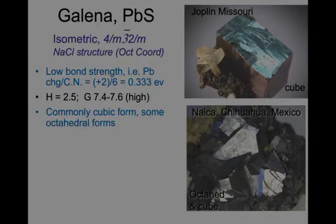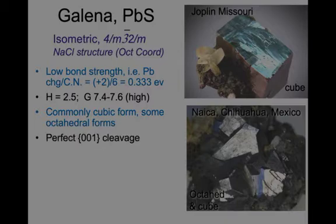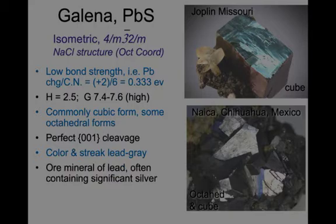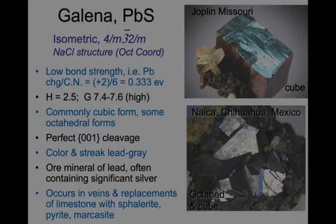It commonly forms cubic forms, as shown in the upper right, and sometimes octahedral forms, as shown in the lower right. It has perfect (0,1,0) cleavage — the cubic forms have the A1, A2, A3 axes at right angles, and each one of those has a cleavage. The color and streak are lead gray to silvery gray, and this is an ore mineral of lead, often containing significant amounts of silver. It occurs in veins and replacements of limestone, and with sphalerite, pyrite, and marcasite.